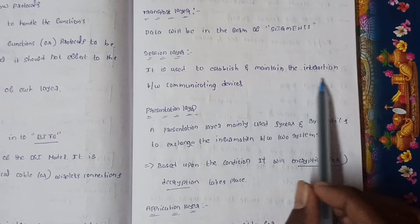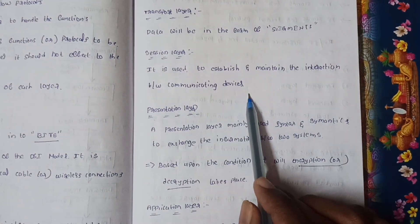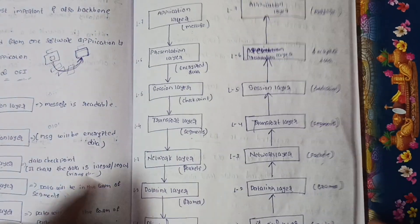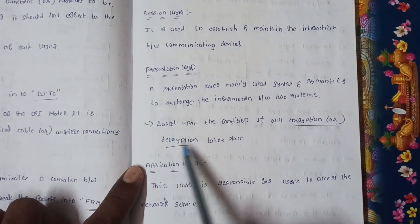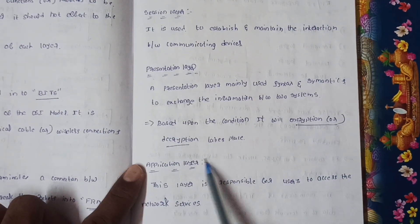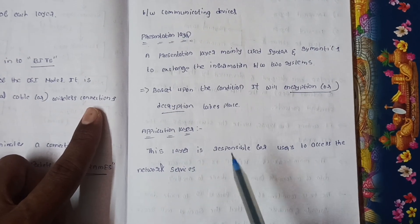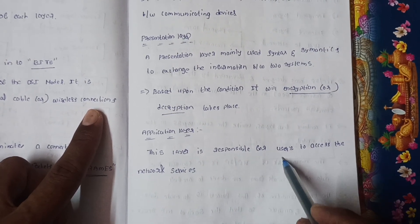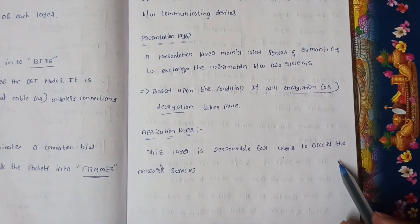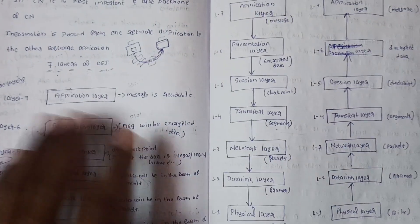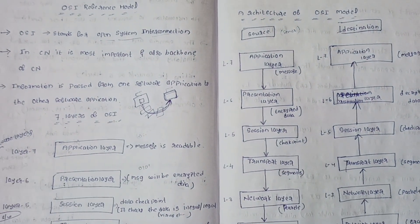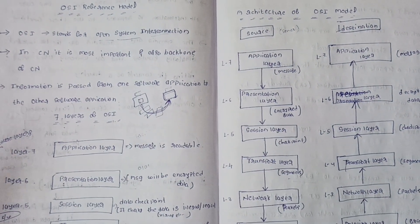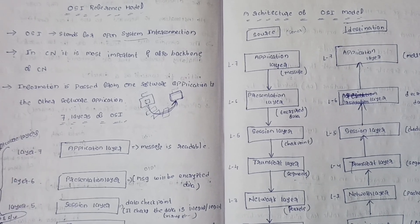The Session Layer is used to establish and maintain interaction between communicating devices, and checks data checkpoints. The Presentation Layer encrypts or decrypts data based on conditions. The Application Layer is responsible for user interaction — the user types and accesses the message here. That covers the full OSI model. Next we will see the TCP/IP model. Thank you, friends.